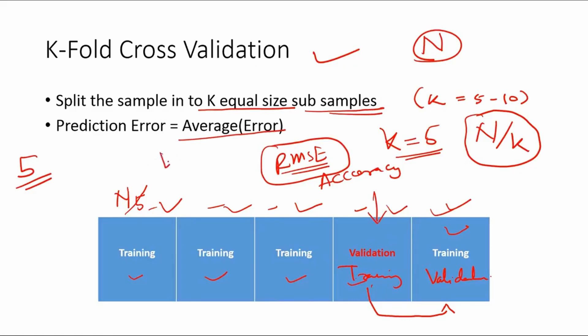So if you have k validations, you will get k error and you just divide that by k, you will get the average error, which is your prediction error.